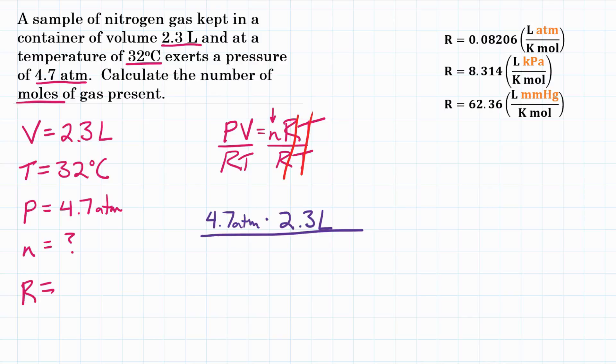Now, what do we do for R? There's actually three or more possible R values. They normally depend on your pressure. In orange, I have atmospheres here, kPa here, and millimeters of mercury here. We're going to pick the one that correlates to the same pressure units that we're using in our problem.